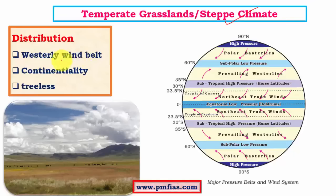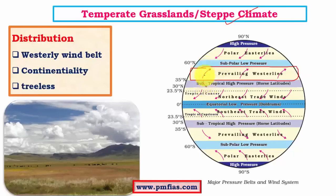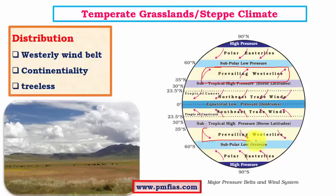The steppe climatic regions mainly come under the westerly wind belt. In the planetary wind system we have trade winds (easterlies), prevailing westerlies, and polar easterlies. Prevailing westerlies blow in the temperate regions from subtropical high to subpolar low. This is the region where steppe climatic conditions occur — in the westerly wind belt of both hemispheres. The most important feature is the treelessness of these regions.